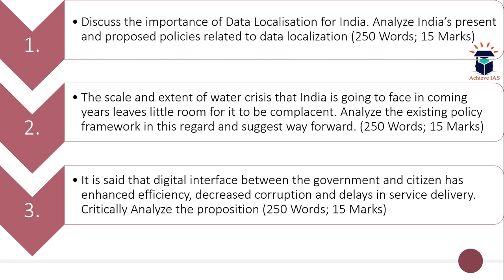The third question is: it is said that the digital interface between the government and citizens has enhanced efficiency and decreased corruption and delays in service delivery — critically analyze this proposition. You have to critically analyze the claim that the digital interface has enhanced efficiency and decreased corruption and delays. The word limit is 250 and the maximum marks are 15.